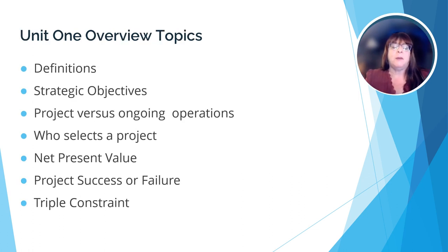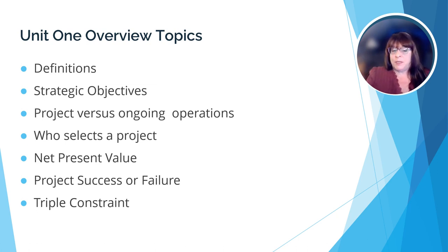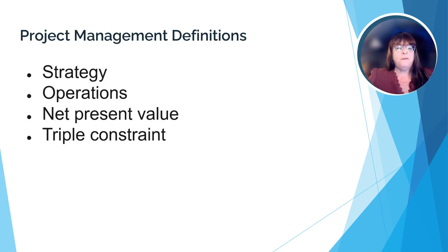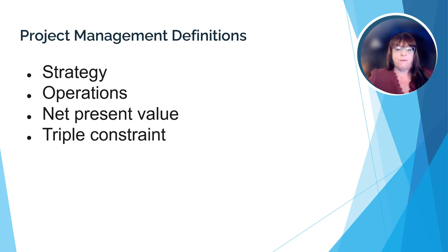So based on our objectives for this unit, here are the specific elements we're going to cover. We're going to look at some definitions: strategic objectives, project versus ongoing operations, who selects a project, net present value, project success or failure, and of course the triple constraint. In this review, we're going to concentrate on four vocabulary words: what is a strategy, what are operations, what is net present value, and what is triple constraint. Let's get started.